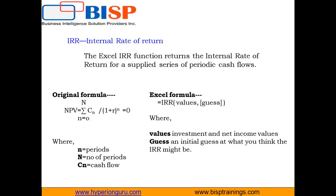The next argument is the guess value — it is an initial guess at which you think the IRR might be. If we omit the guess value, it defaults to 10%.